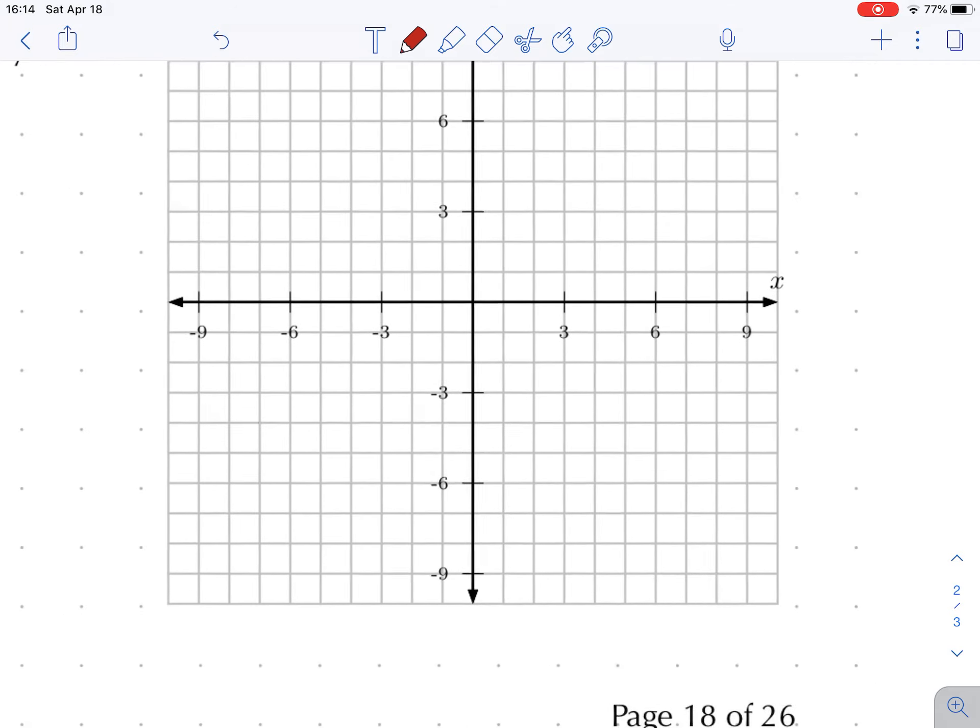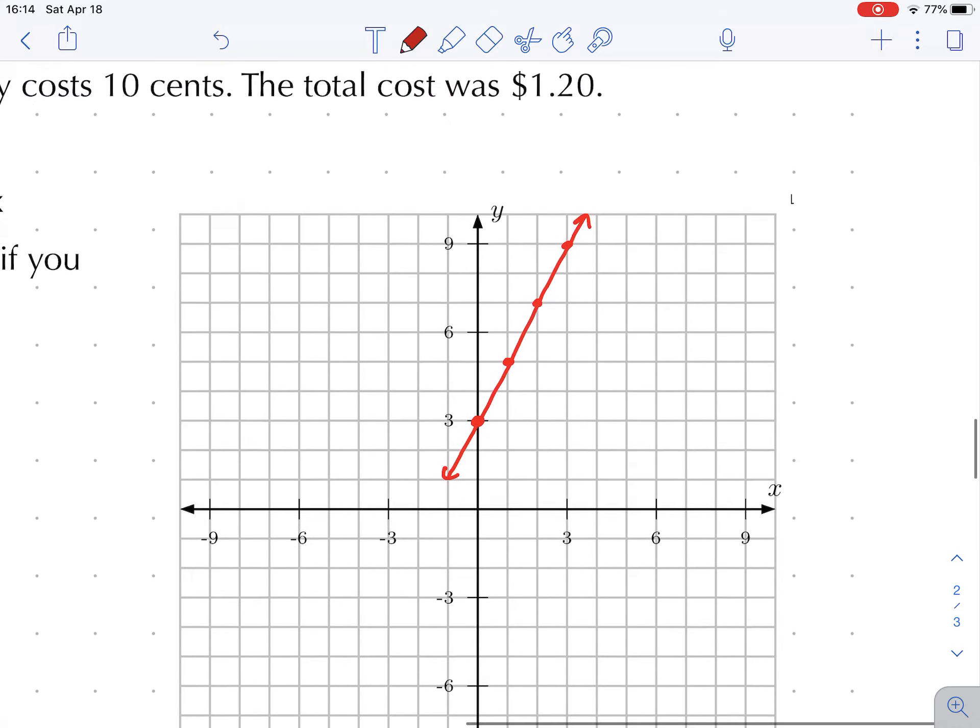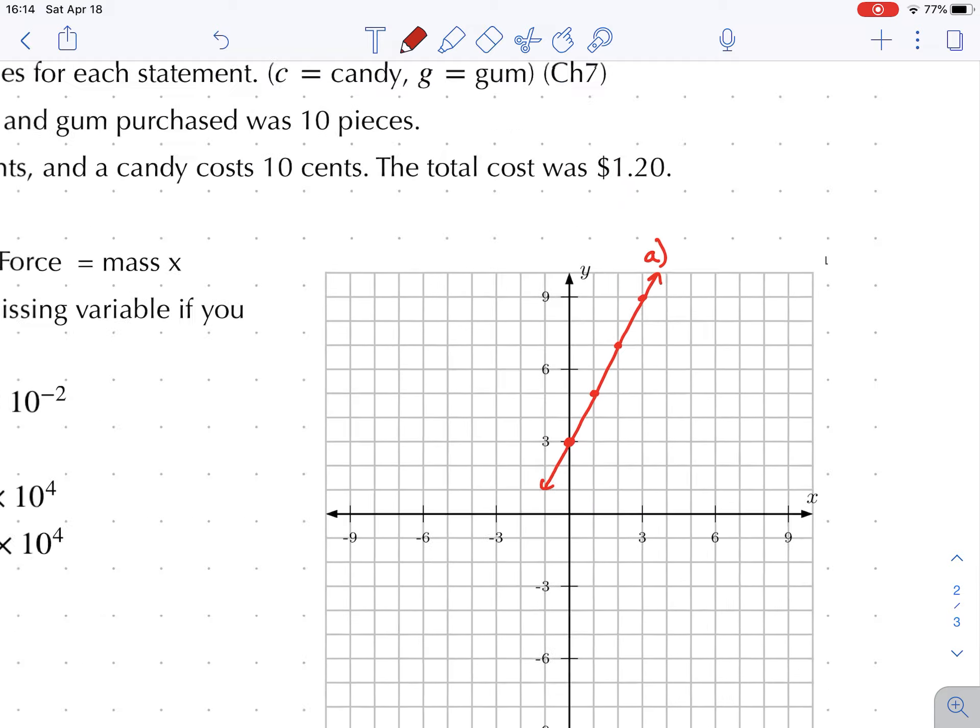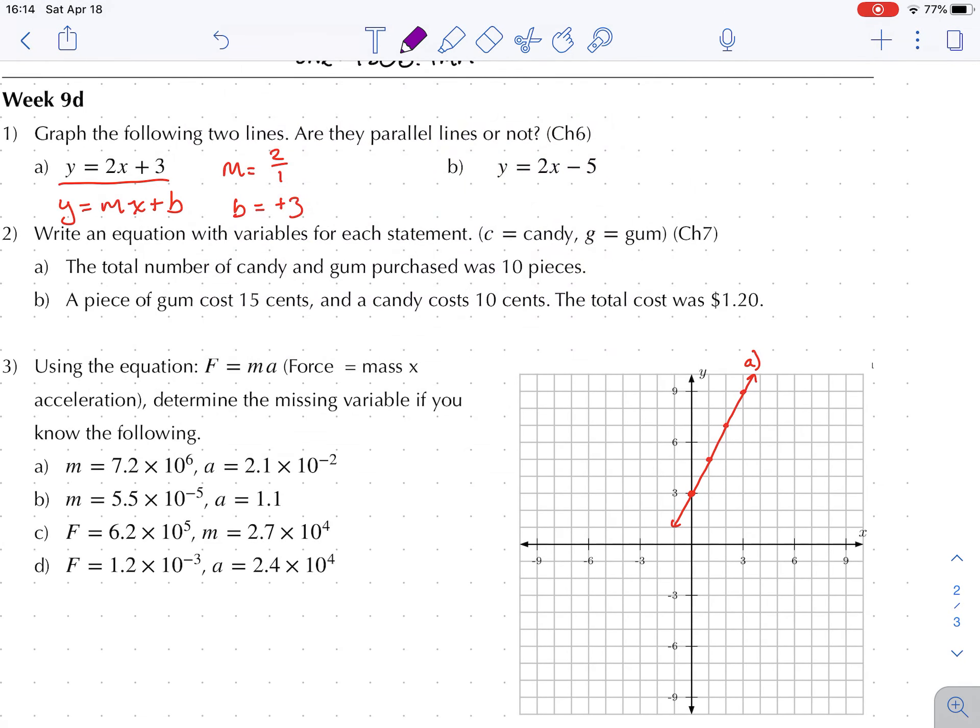So let's go down to the graph. We start at plus 3, we go up 2 over 1, up 2 over 1, up 2 over 1, and then we draw a nice straight line through those. That is the graph from letter a - beautiful, easy to graph.